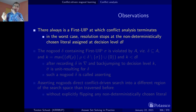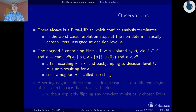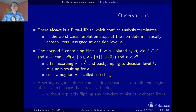Now back to conflict analysis. The no-good that contains the first UIP is violated in the assignment. The maximum decision level of the remaining literals — if you subtract the first UIP from the no-good and look at the decision levels of the remaining literals and take the maximum — that's where we have to jump back to.